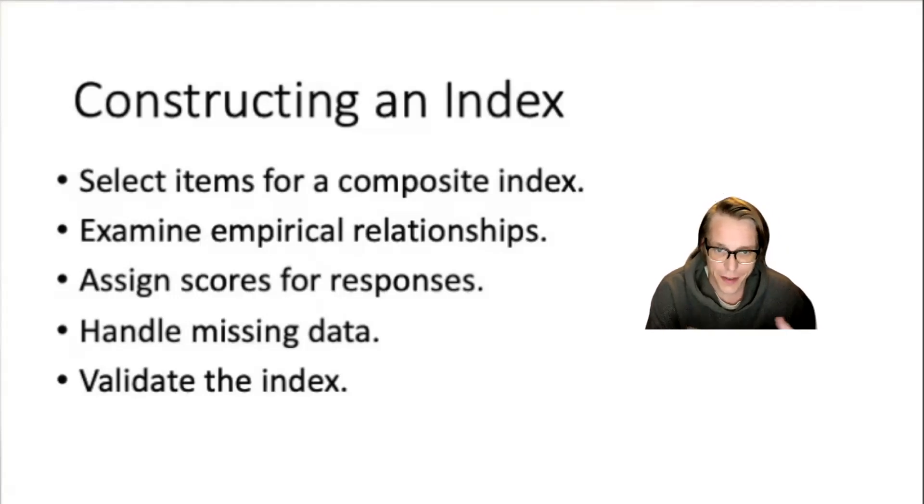So the steps for constructing an index include first selecting the items for a composite index, which simply means a combined index of data items. Then examining the items for empirical relationships that make sense and can predict each other's responses. Do the items make sense? Basically. Are they all related to just one concept you want to measure?